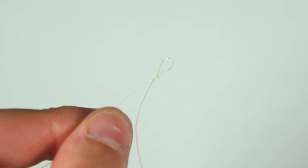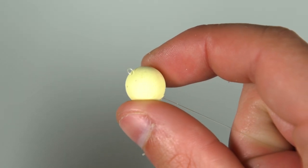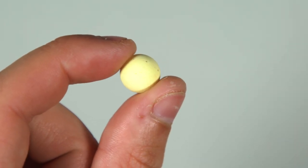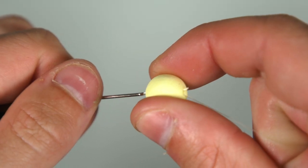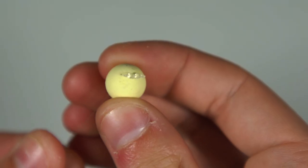In one end you need to tie a small overhand loop knot to act as your hair to thread your hook bait onto. Take your chosen hook bait and thread it onto a baiting needle and then onto the loop you just created. Hold the bait in place with a bait stop.